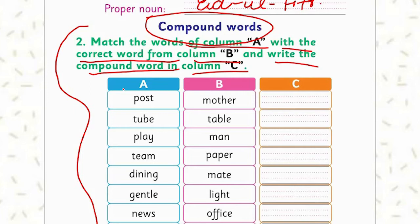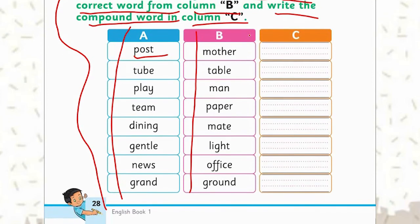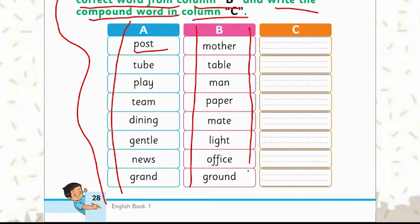Let's see the first one: 'Post.' You have to match it with words from the list — mother, civil, man, paper, mat, light, office, or ground. The answer is post office — that's where mail goes. So we write post office.